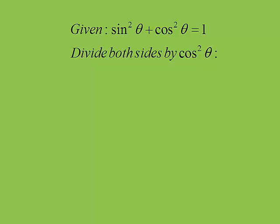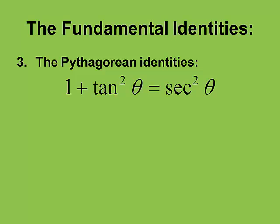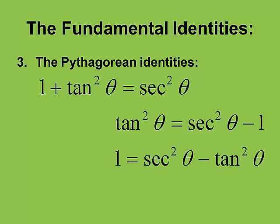We have one more Pythagorean identity to discover. This time we divide both sides of the equation by cosine squared. Sine squared over cosine squared is tangent squared, cosine squared over cosine squared is 1, and 1 over cosine squared is secant squared. That gives us our third and final Pythagorean identity: tangent squared plus 1 equals secant squared. Using subtraction: tangent squared equals secant squared minus 1, and 1 equals secant squared minus tangent squared. We use these on occasion; the first group of three are the most popular.